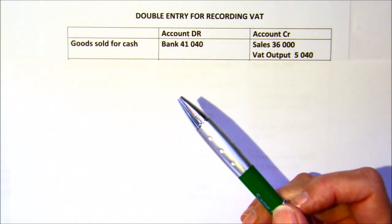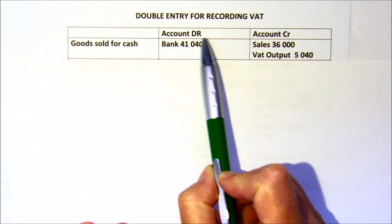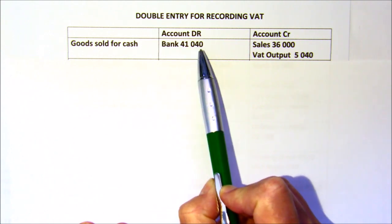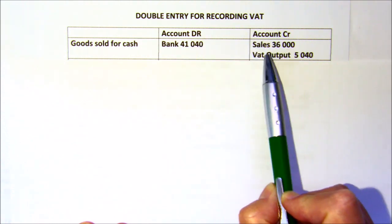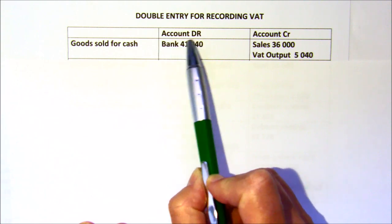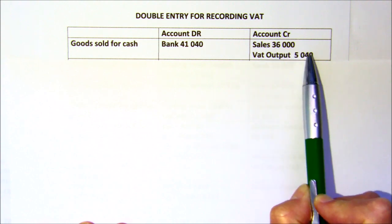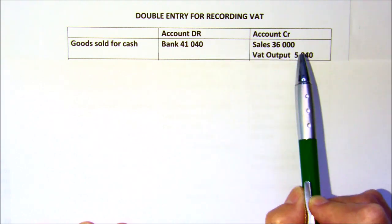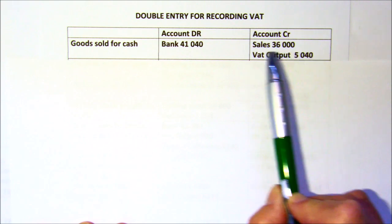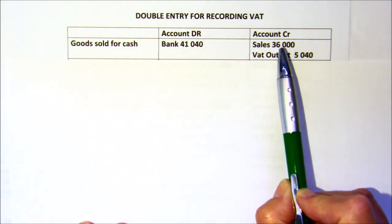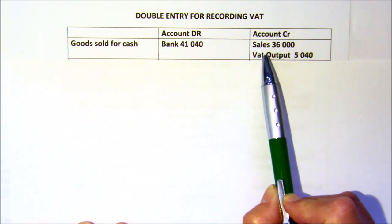Let's look at the double entries. If you are selling goods for cash, you're going to receive money, so the full amount received — forty-one thousand and forty — goes into your bank account and into your cash receipts journal. Some of it is sales and some is VAT, so you calculate the VAT portion. That VAT is your VAT output — how much you owe to SARS from these sales. While you've collected it in your bank, it's not yours; it will be paid over to SARS. Your sales account is credited with the exclusive amount — the amount excluding VAT.